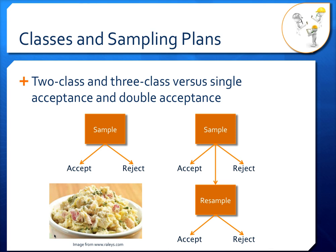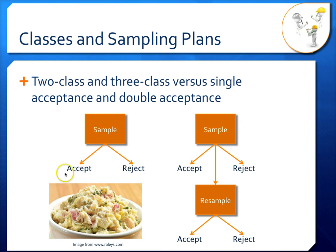In a single acceptance plan, we have an accept-or-reject decision. In a two-class plan, we only worry about conforming and non-conforming. In a three-class plan, we can still do single acceptance — take one sample and make a single accept-or-reject decision — but we have to account for marginal samples. If we have too many marginal samples, we'll need to reject. And if we have even one sample above big M, we also have to reject. We can still accept if we have some marginal samples, as long as we don't have too many, depending on the criteria set for the particular sampling plan.